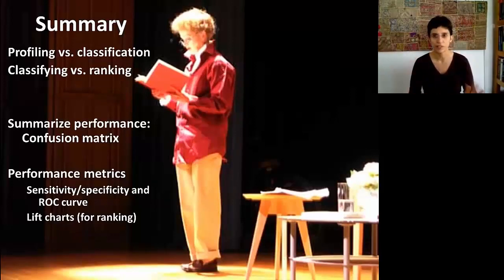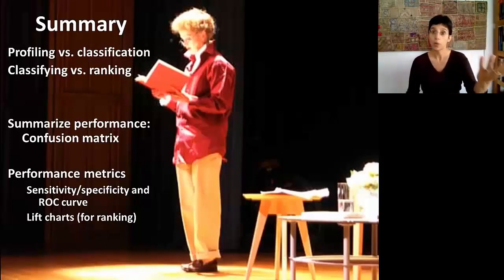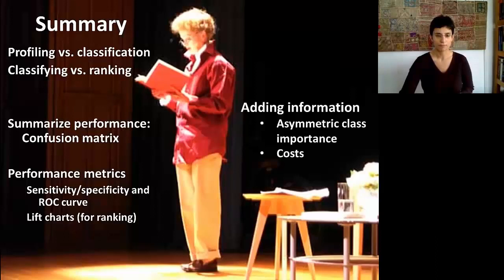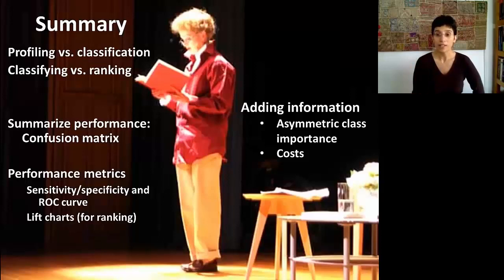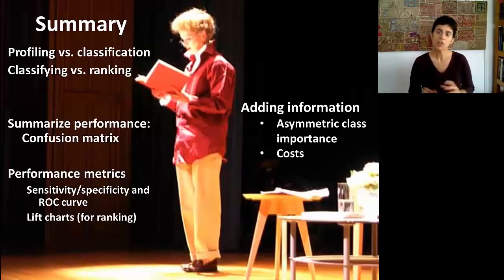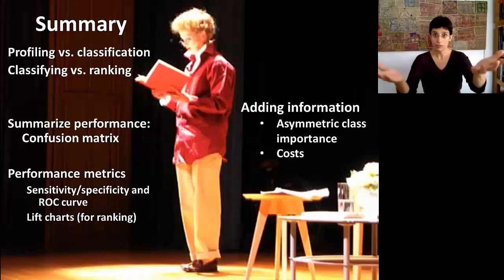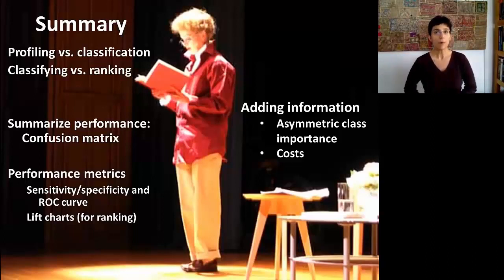Finally, we also talked about issues when we have one class that's more important than the other. We also talked about costs, misclassification costs. And one more point, which is not mentioned here, is talking about a sample that is not a random sample or representative of the class breakdown relative to the population. Keep all these in mind when you're going to evaluate all the different classifiers that we use in the next sessions.